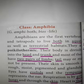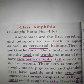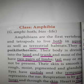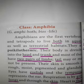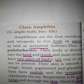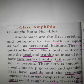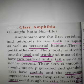Amphibia is the first class under tetrapods. Tetrapods means they have two pairs of limbs — four legs. 'Tetra' means four and 'poda' means legs. Amphibians are the first vertebrates which live both in aquatic as well as terrestrial habitats. Aquatic means in water; terrestrial means on land.